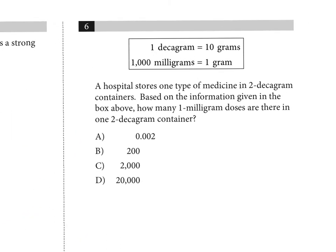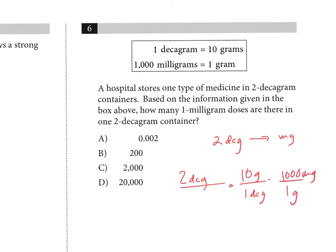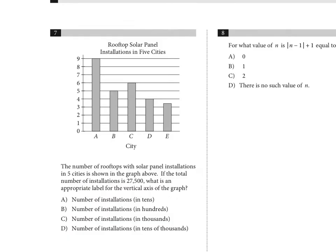Number six: a hospital stores medicine in two-decagram containers. How many one-milligram doses are in one two-decagram container? This is a unit conversion. Two decagrams times 10 grams per decagram equals 20 grams, then times 1000 milligrams per gram equals 20,000 milligrams. So there are 20,000 one-milligram doses.